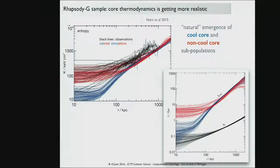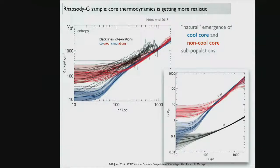RAMSES simulations from the Rhapsody-G sample — ten halos around 10^15 solar masses — show entropy profiles with two populations: high entropy cores where AGN has already heated the gas, and low entropy cores where gas cooling dominates and rain is beginning. Observations from the ACCEPT sample are shown as black lines; models are getting close but are slightly too low in entropy. These low-entropy systems have cooling times comparable to a few freefall times.